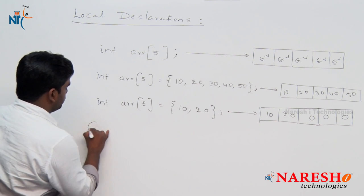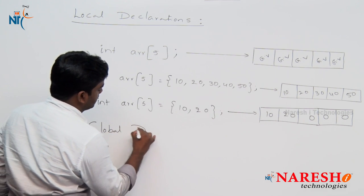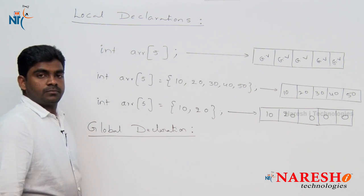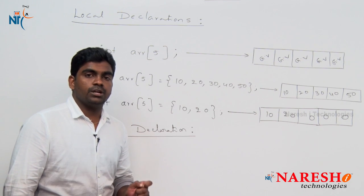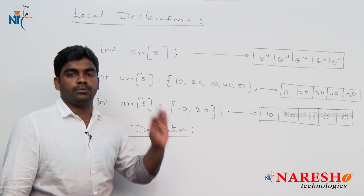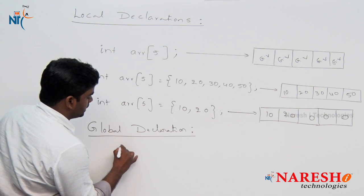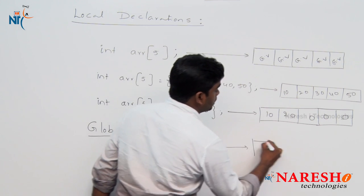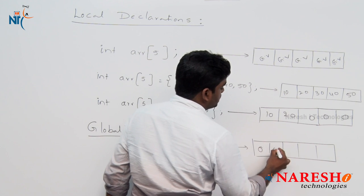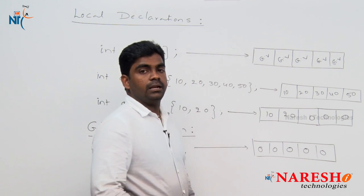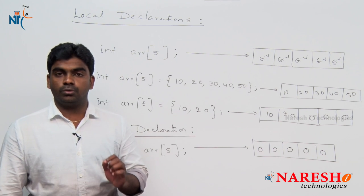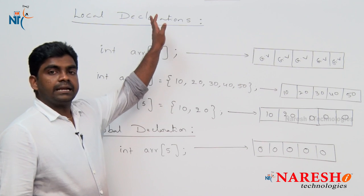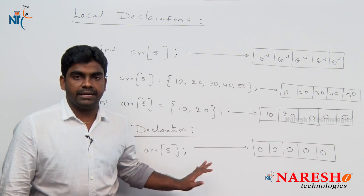For global declarations, we can declare an array globally outside all the methods. A global variable means a declaration outside all the functions in the program. If you declare one array globally without initializing any value, no problem — all five locations are initialized with zeros, because a global variable's default integer value is 0, as we already discussed in the variables concept.